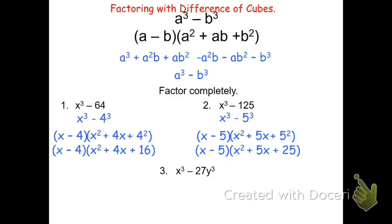Now the last one's got a variable on both pieces. So when I rewrite this and think of it as what the perfect cubes are going to be, it's x³ - (3y)³. Substituting this in, I'm going to get (x - 3y)(x² + 3xy + (3y)²).